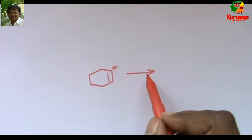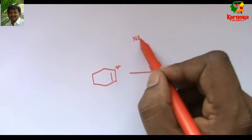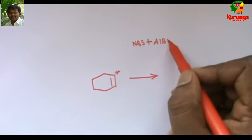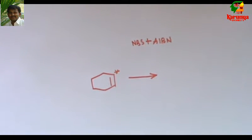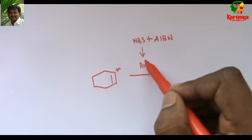When I add NBS and AIBN, AIBN is a very well known radical initiator. This gives Br radical.